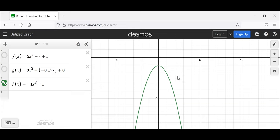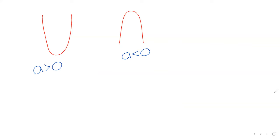Does anybody have questions about what I've said already before we continue? So if the a is negative, then the parabola will be facing down? Right — if a is negative, it's down; if a is positive, it's up.